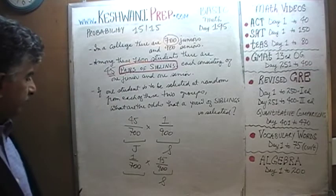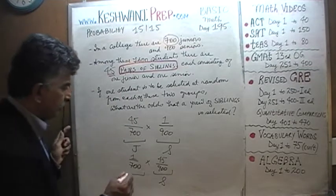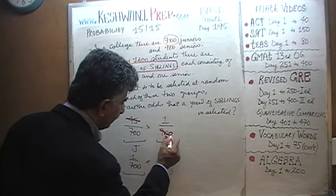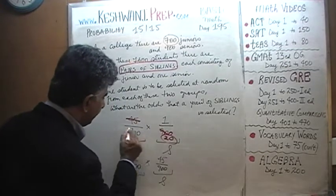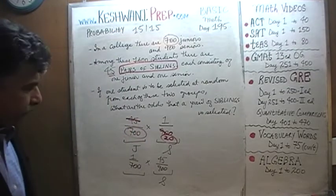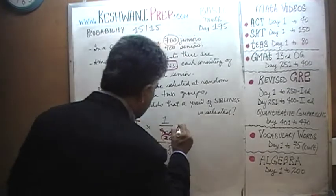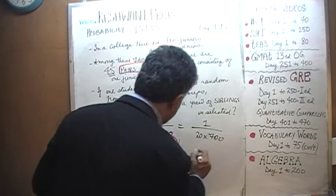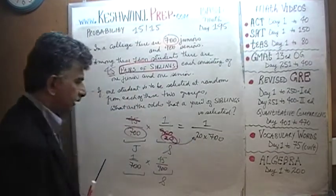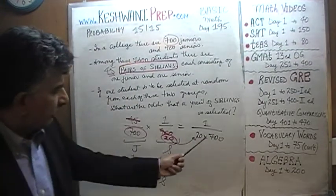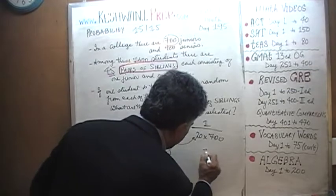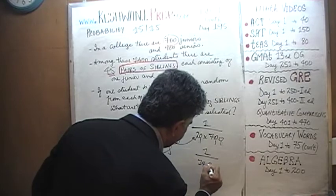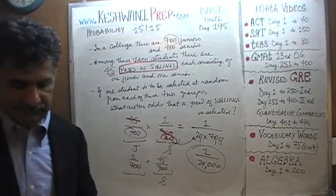Now we simply do the math. We have 45 on top and 900 on the bottom. The 45 cancels with 900 — 900 divided by 45 gives 20. So it becomes 1 divided by 20 times 700. That's 20 times 700: 7 times 2 is 14, and then we have three zeros. The answer is 1 out of 14,000.